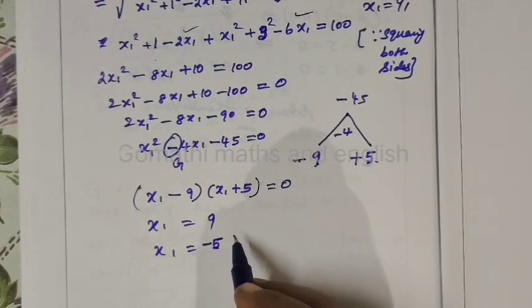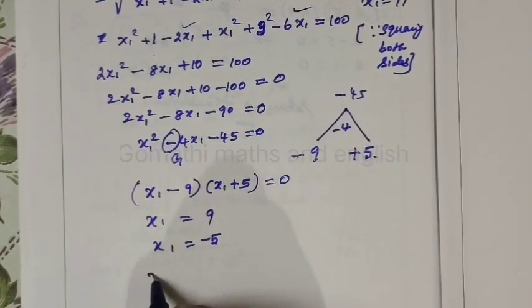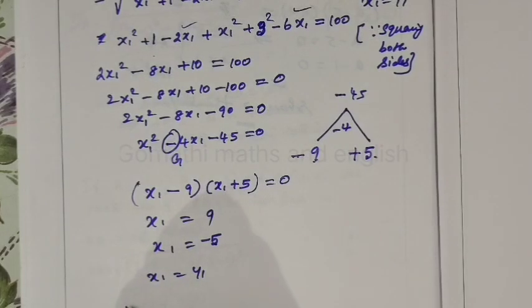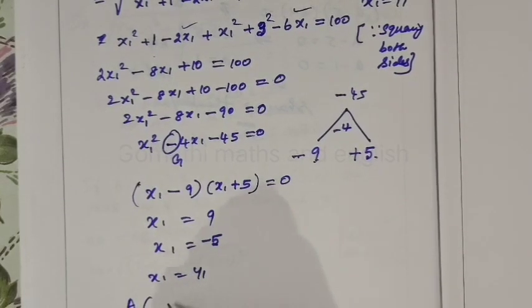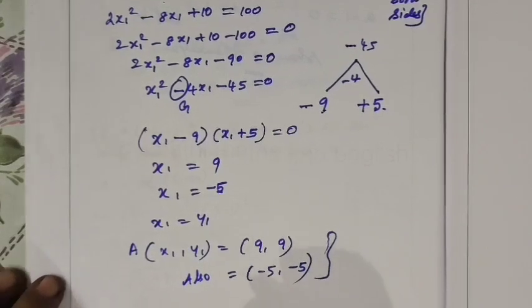So x1 equal to y1. We need to get the point A. How do we call x1? This is minus 5. This is also minus 5.